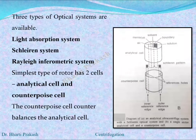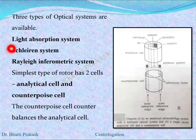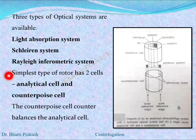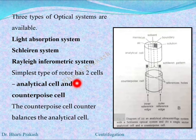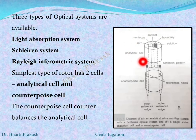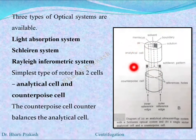There are three types of optical systems available: first is the light absorption system, there is the Schlieren system, and there is the relay interferometric system. The rotors in the centrifuge are also specially designed. The simplest type of rotor has two cells — the analytical cell and the counterpoise cell. The counterpoise cell balances the analytical cell.